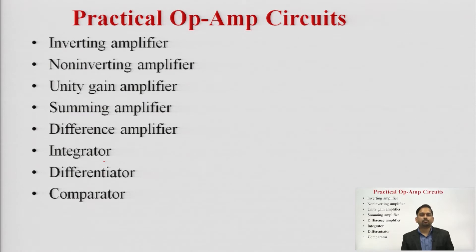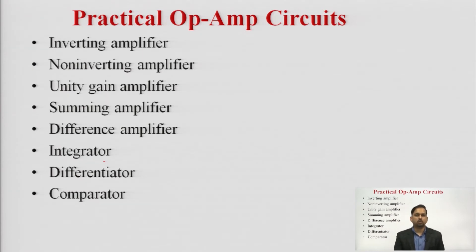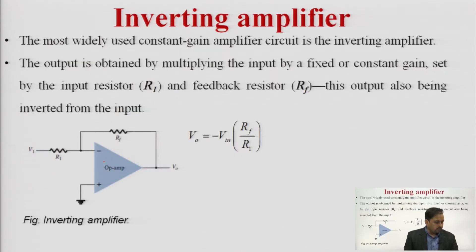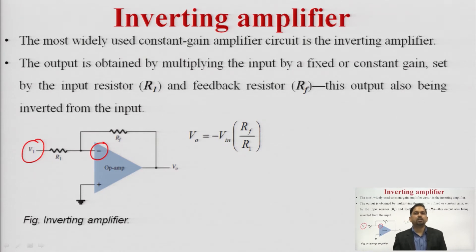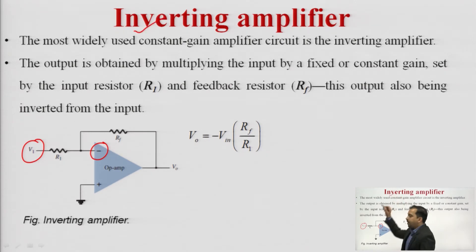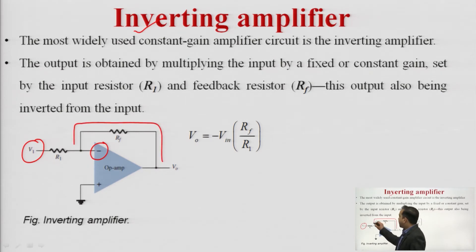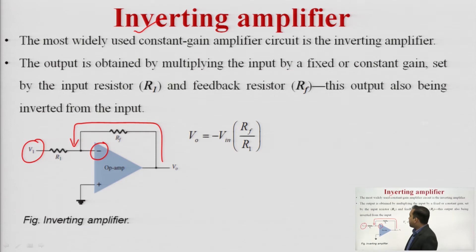If we talk about the practical circuits of op-amp, we have some linear applications and some non-linear applications. We will stick to resistors, capacitors, and inductors here. For the inverting amplifier, we have seen this configuration where input v1 is applied to the negative terminal of the op-amp. The amplifier is known as inverting, and we are utilizing negative feedback — taking some part of the output and feeding it back to the input side.